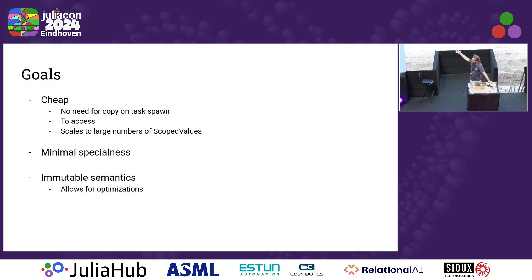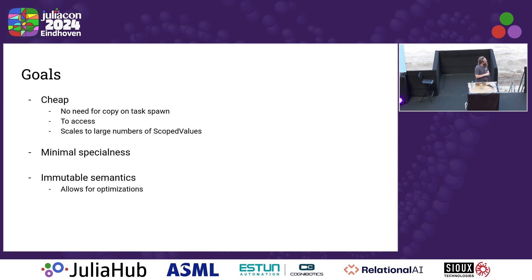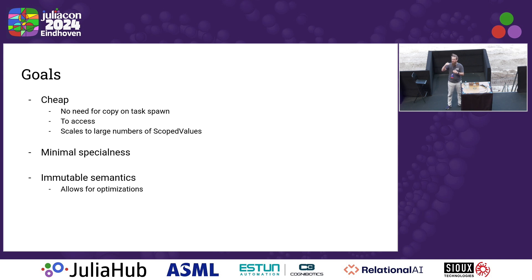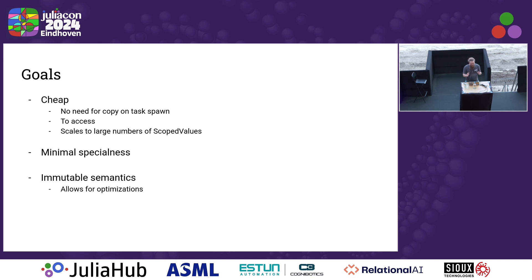What were our goals? We wanted them to be as cheap as possible. So when we switch tasks there should be no copies, no overhead. When you spawn a new task, there should be no need to copy something. They should also be cheap to access, and that's actually very tricky. I settled at around 12 nanoseconds — that would be lovely.